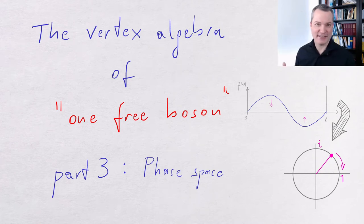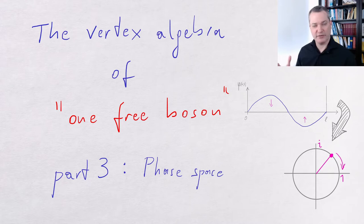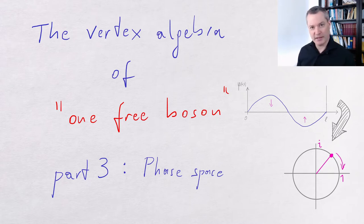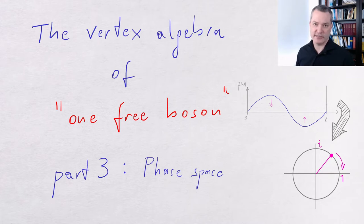Hello Internet. This is the third part in our series about the free boson. I will link the previous parts in the description below. Last time we looked at the real valued Fourier modes of our field that describe standing wave oscillations.